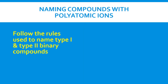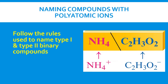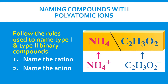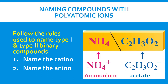How do we name compounds with polyatomic ions? We follow the rules we use to name type 1 and type 2 binary compounds: identify and name the cation, identify and name the anion, and put the two together. For example, NH4⁺ is a polyatomic ion — that's ammonium. C2H3O2⁻ is acetate. Put them together and you get ammonium acetate.